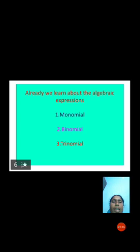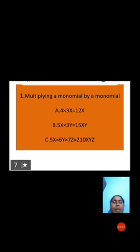We already learned about algebraic expressions: the first type is a monomial, the second is a binomial, and the third is a trinomial. Now, first of all, we will look at multiplying a monomial by a monomial.